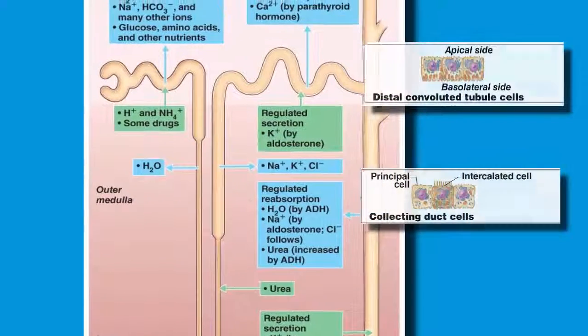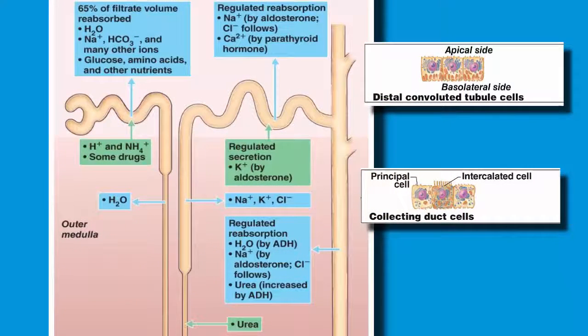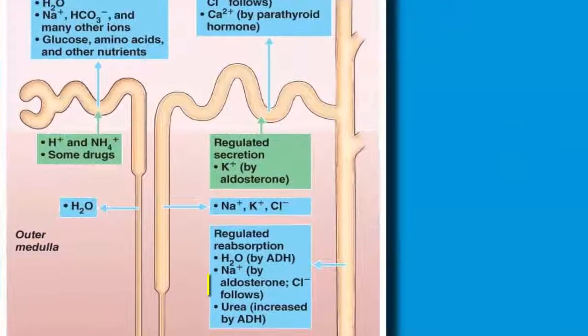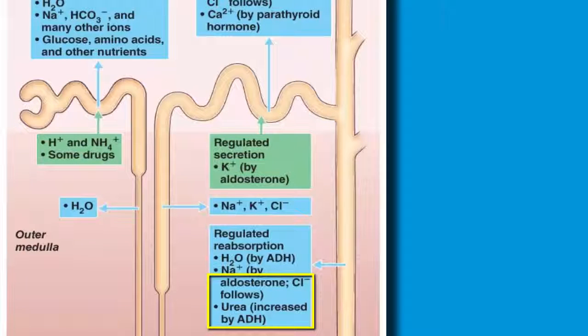Reabsorption in the distal convoluted tubule and the collecting duct is finally controlled by hormones, and we will be investigating it further in our next video. We will be studying two hormones that control these tubules: antidiuretic hormone produced by the posterior pituitary, and aldosterone, which is produced by the adrenal gland.